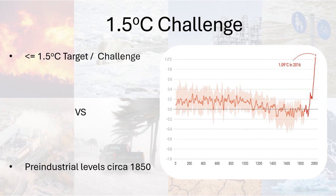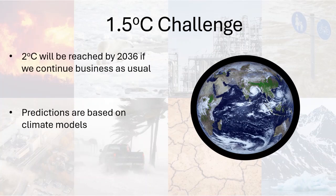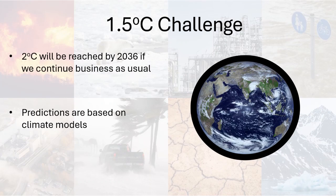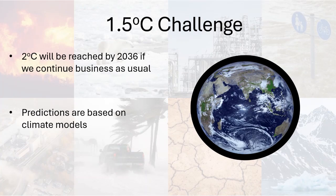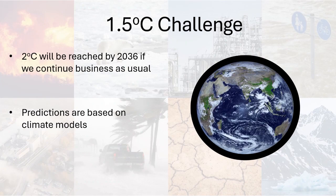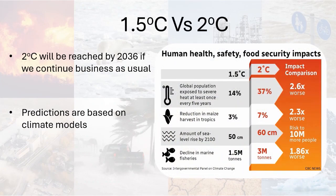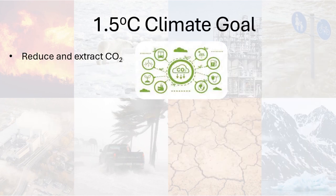If we do not limit emitting CO2 and continue business as usual, we are going to reach 2 degrees by 2036. These predictions are based on various climate models scientists have developed in the past few decades, studying the behavior of Earth and its response to global warming. The figure shows the disaster comparison between 1.5°C and 2°C based on simulations. In order to meet the climate goal of 1.5°C, emissions of CO2 are to be reduced and existing CO2 is to be extracted.